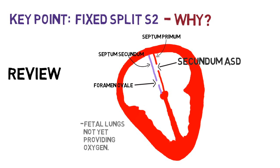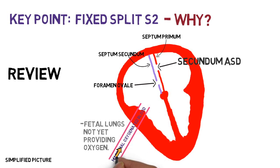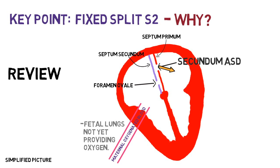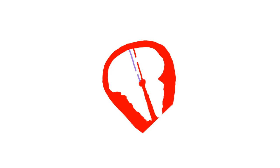The fetal lungs are not yet providing oxygen, so all fetal oxygen must come through the umbilical vein from the mother. The foramen ovale and the secundum ASD provide a passageway for oxygenated blood to enter the fetal systemic circulation without having to go through the undeveloped fetal lungs.